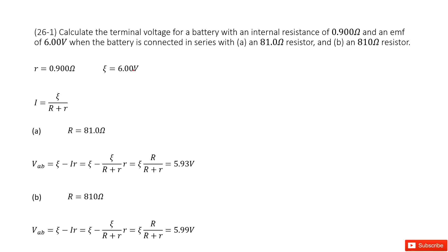We need to calculate the terminal voltage, which we can consider as VAB. In the first case, this battery is connected in series with an external resistor of 81 ohms. So how can we do that?